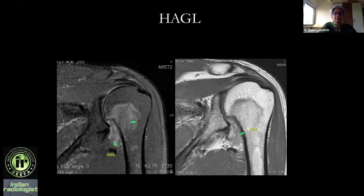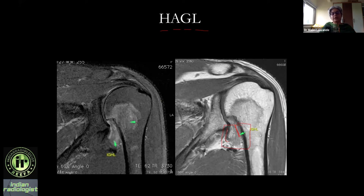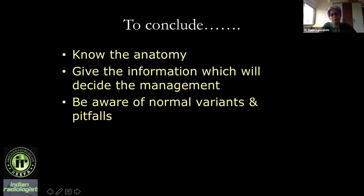For anterior instability, the last two questions: is the inferior glenohumeral ligament intact, and is the coracoid process intact? The inferior glenohumeral ligament is essentially the inferior capsule. If there is disruption from the humeral attachment, that is a HAGL lesion — humeral avulsion of the glenohumeral ligament — which is very important because this is a blind area for the surgeon when he goes in, so he needs to know beforehand in order to plan the repair.